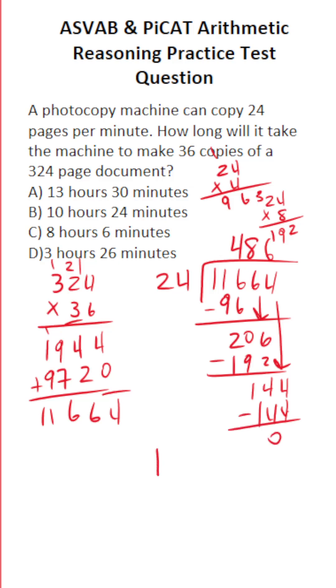So it's going to take 486 minutes to make these photocopies. That said, we have to convert this to be in terms of hours and minutes. There are 60 minutes in every hour. So we're going to take this and divide it by 60.